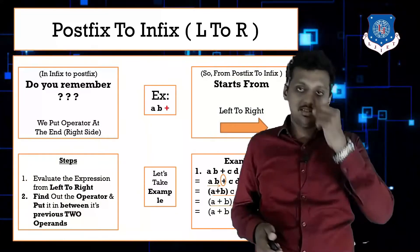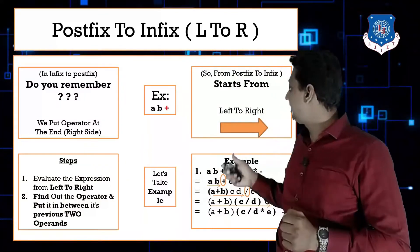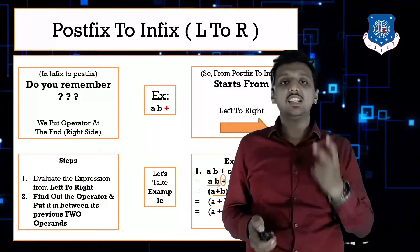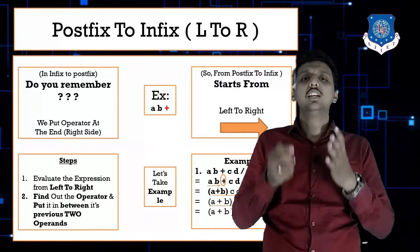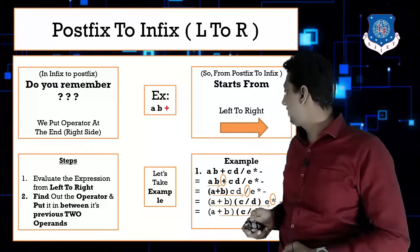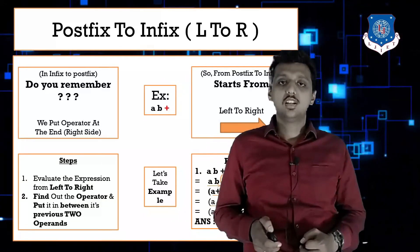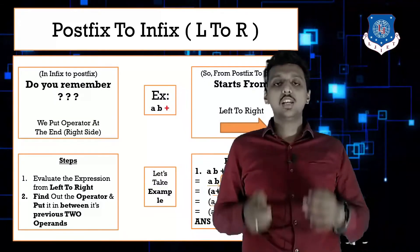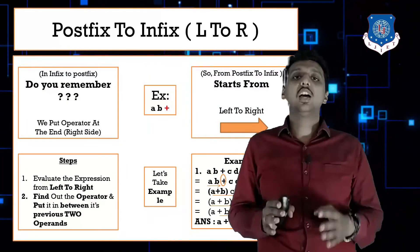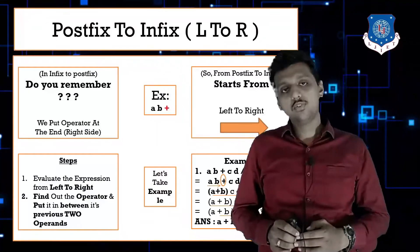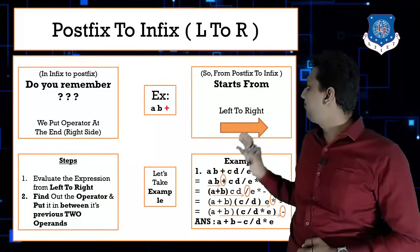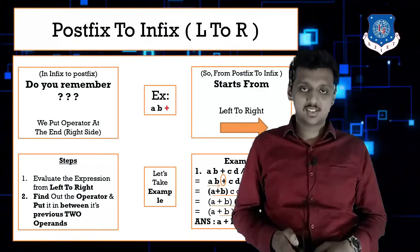Finally, the minus operator is found. Before the minus, the two remaining operands are (a+b) and (c/d*e). Place minus between them. The final infix answer is: a+b - c/d*e. This is how you can convert a postfix expression into infix.